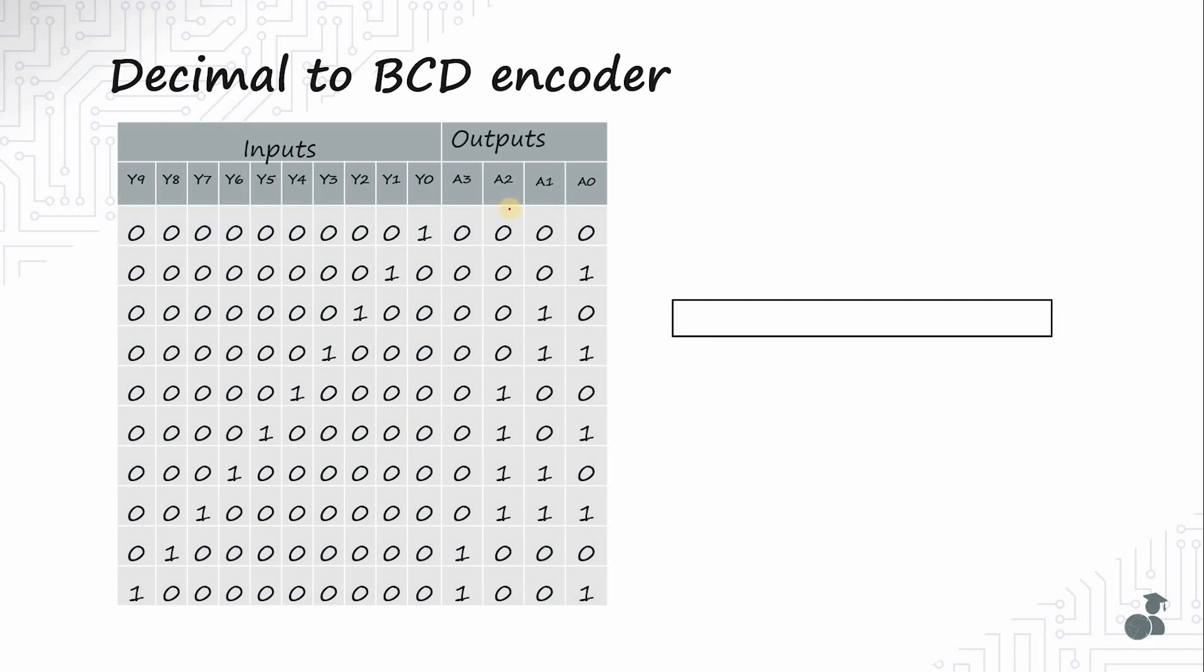From these outputs you can also represent it in gate level or by using expressions. For A0, it is high only when y1, y3, y5, y7, or y9 are high. Similarly for A1, it is high only when y2, 3, 6, or 7 are high. A2 is high only when y4, y5, y6, and y7 are high. And A3 is high only when either y8 or y9 is high.